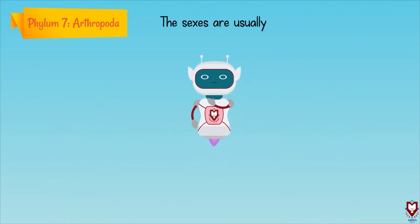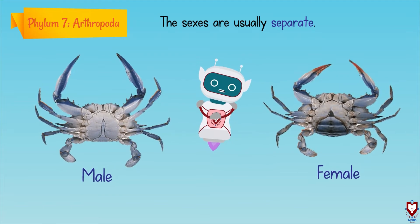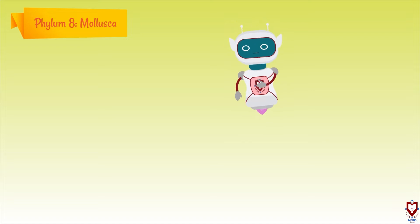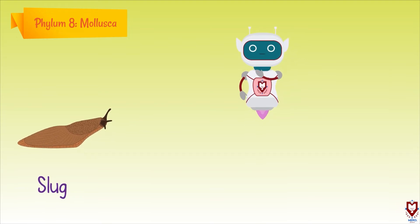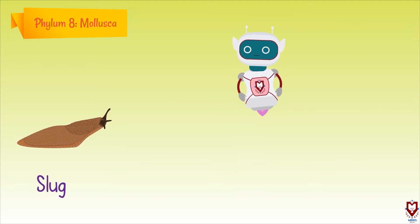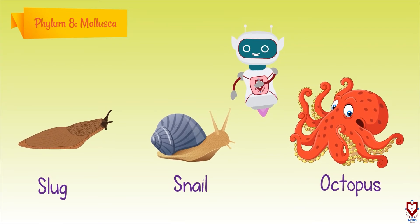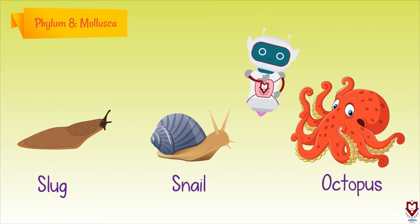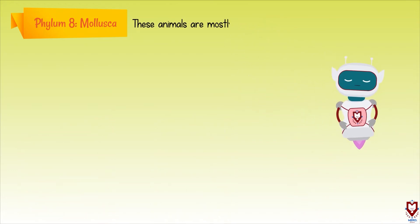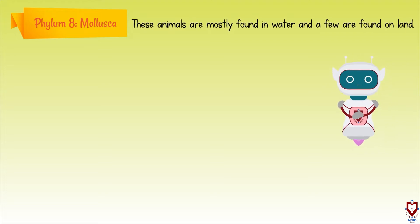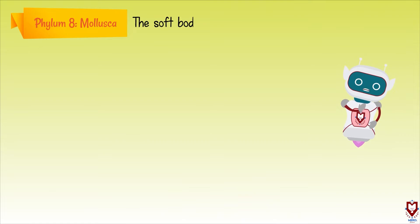The sexes are usually separate, meaning there are distinct male and female bodies. Moving on from Arthropoda, the next phylum is Mollusca. Mollusca is a group of soft-bodied animals. These animals are mostly found in water and a few are found on land.